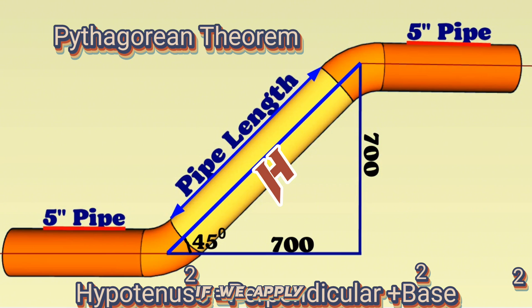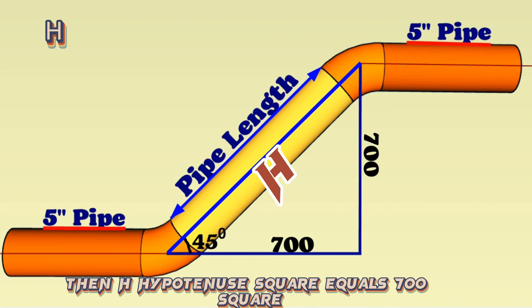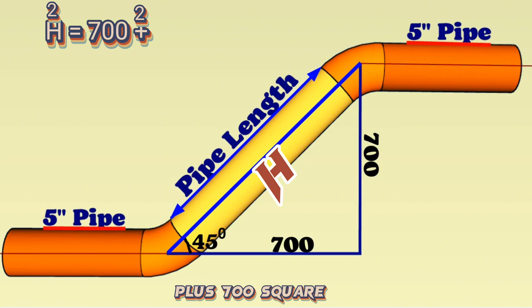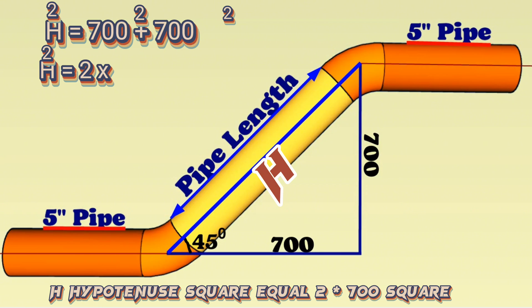If we apply the Pythagorean theorem formula to our example, then H hypotenuse squared equals 700 squared plus 700 squared. We are continuing the calculation, H hypotenuse squared equal 2 times 700 squared.